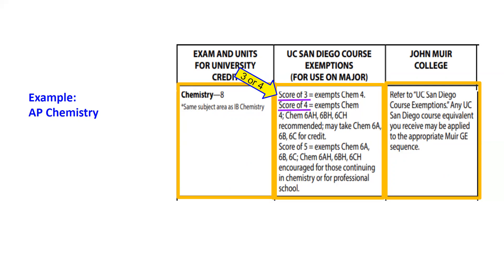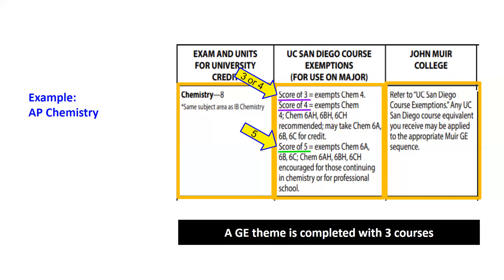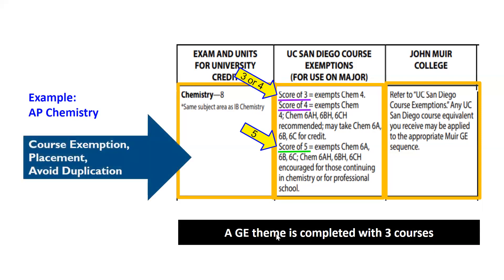A score of five grants credit for Chemistry 6A, 6B, and 6C — three courses that clear an entire Muir Math Natural Science GE theme. Remember, three courses in the same GE theme clear a GE area. Per this score, you cannot take Chemistry 6A, 6B, or 6C at UCSD because of duplication of credit. So, if you still needed to take one year of Chemistry courses for pre-health requirements, you can take the Chemistry 6 Honors Series — designated as Chemistry 6AH, 6BH, and 6CH. This is an example of how an exam tells us how it applies towards Muir GE, how it can grant specific course credit, give placement information, and how to avoid duplication of credit issues.